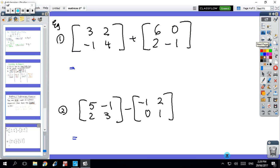I'll do the first one for you. We've got a 2x2 and a 2x2, so we're going to add them. 3 plus 6 is 9, 2 plus 0 is 2, minus 1 plus 2 is 1, 4 plus minus 1 is 3. And that's the answer.